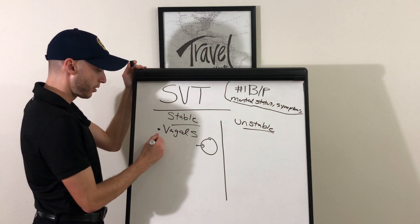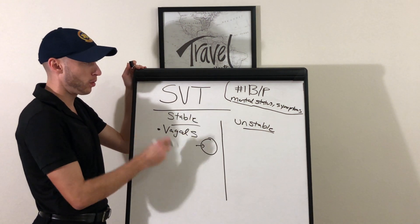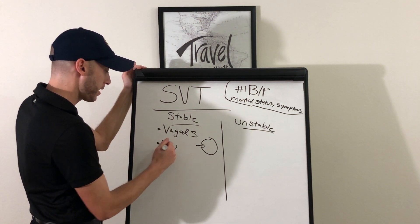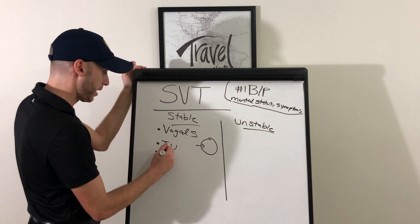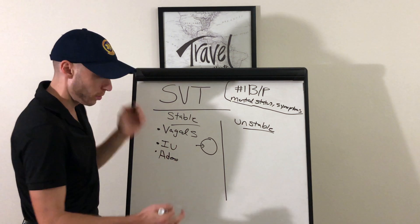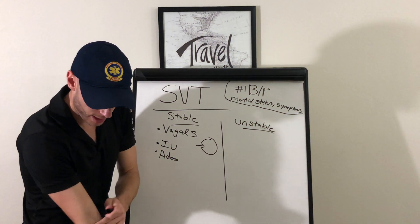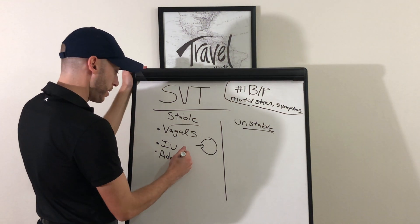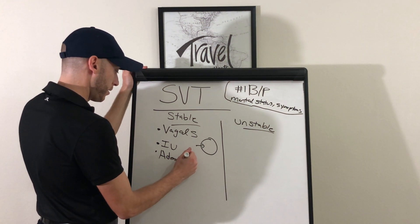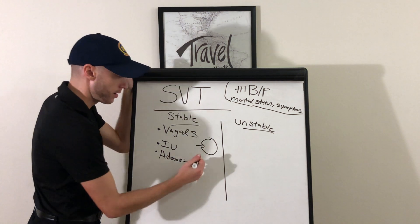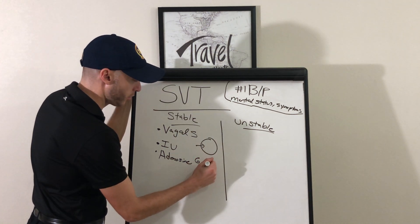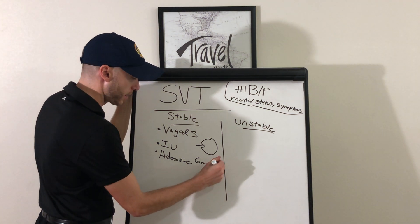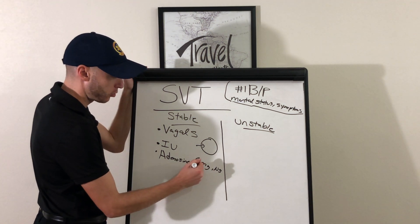Under the stable algorithm, if vagals don't work and the patient stays stable, we're going to start an IV and give adenosine. Start an IV in the AC — 18 or 20 gauge, bigger the better. Adenosine 6 milligrams. Don't forget, you have to follow it up with a flush right behind it — a normal saline flush. If that doesn't work, we try 12 milligrams.